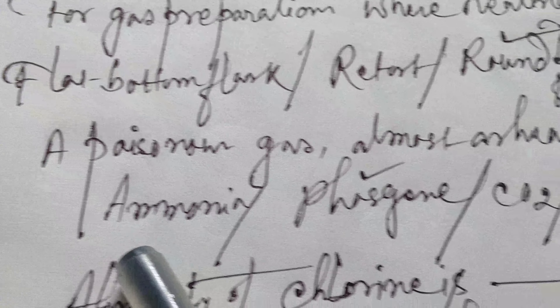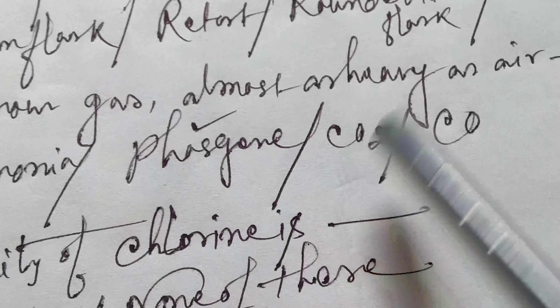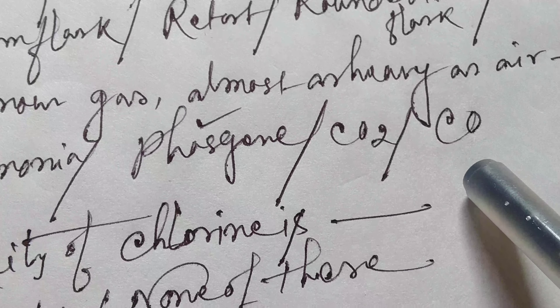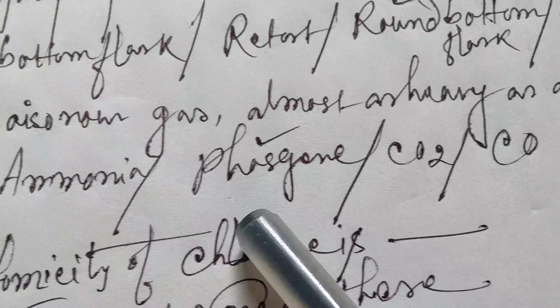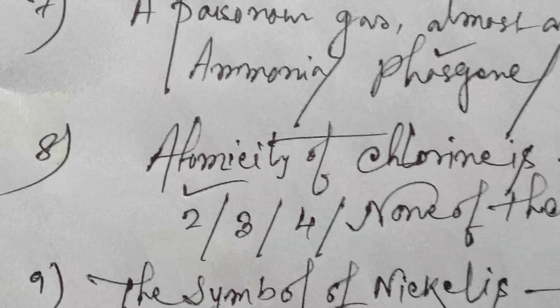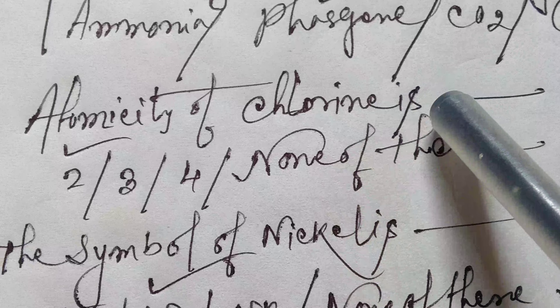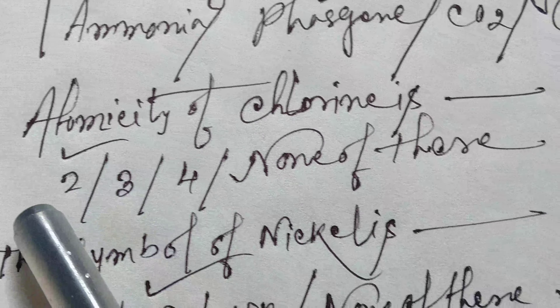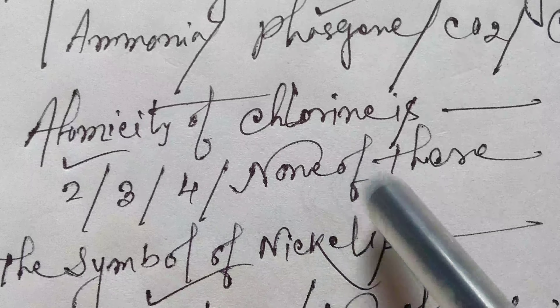Question seven: which is a poisonous gas almost as heavy as air — ammonia, phosgene, carbon dioxide, or carbon monoxide? The answer is phosgene.